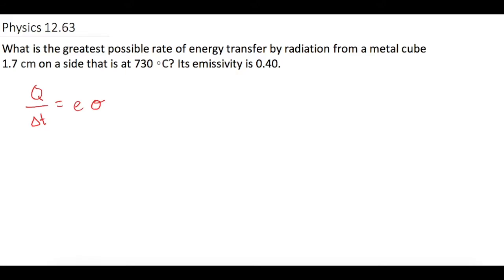Then we multiply these also by the surface area that we're looking at. So in this case it's the surface area of the total cube. And then we multiply that by the temperature to the fourth power.